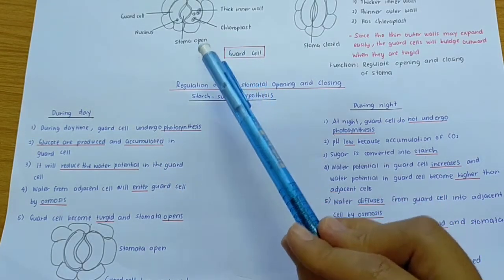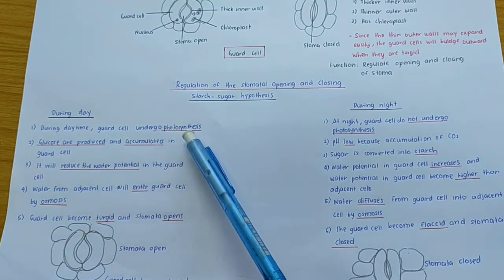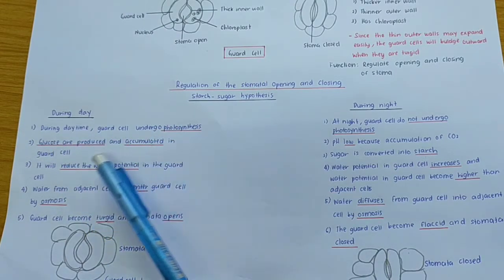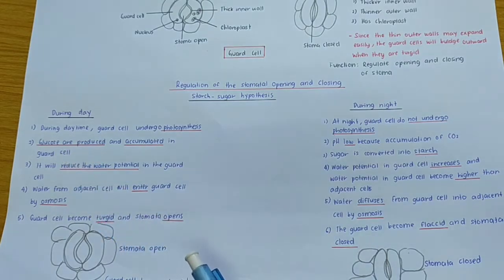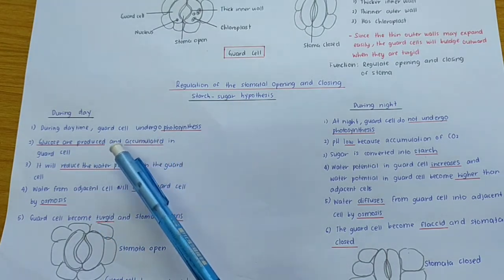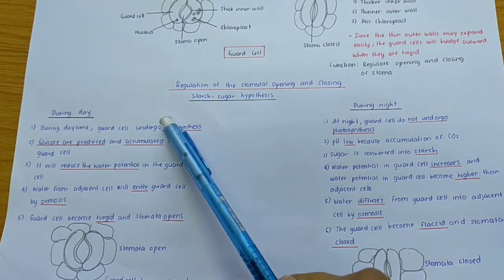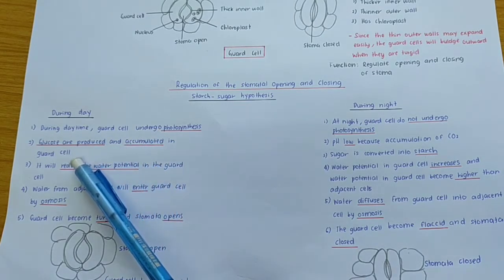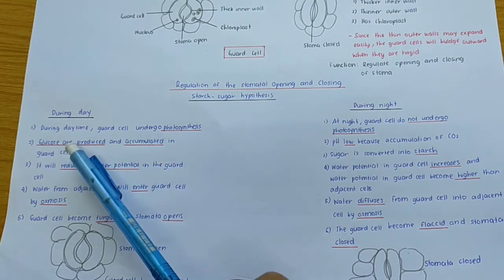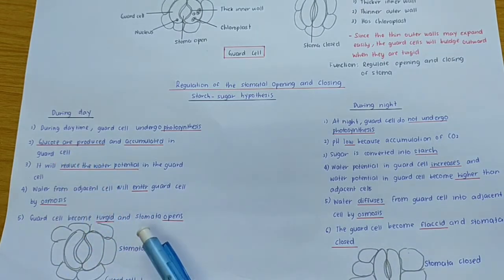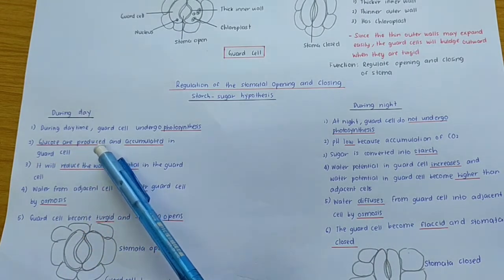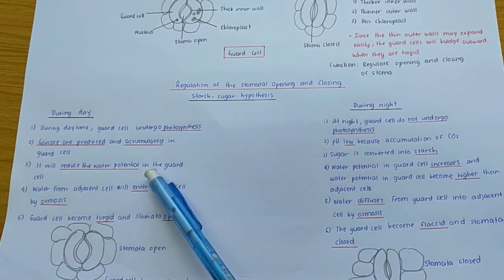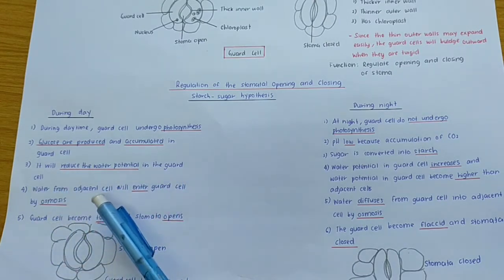During daytime, the guard cell undergoes photosynthesis — remember, it can do this because it contains chloroplasts. Since photosynthesis occurs, glucose is produced and accumulated in the guard cell. Since glucose is a solute, when solute concentration is high, it will reduce the water potential in the guard cell.